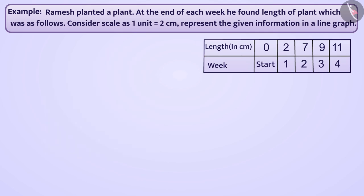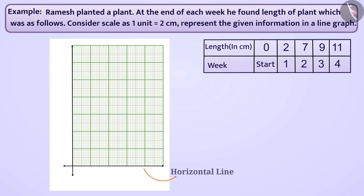Draw two mutually perpendicular lines on the paper. The horizontal line is the x-axis and vertical line is the y-axis. We will show the time in weeks on the x-axis. Similarly, we will show the length of the plant on the y-axis.